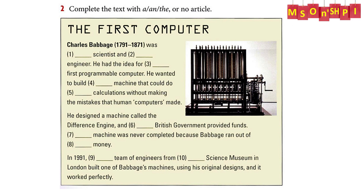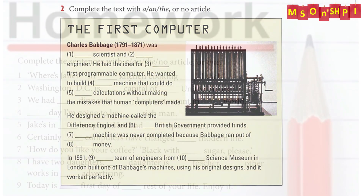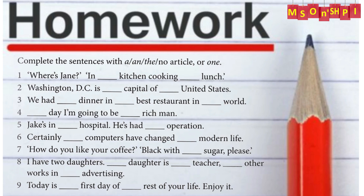So you completed the text with indefinite articles — a, an — the definite article — the — or no article. Homework: Complete the sentences with a, an, the, no article, or one.